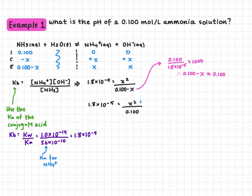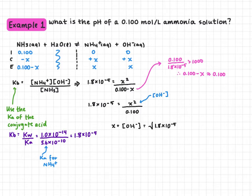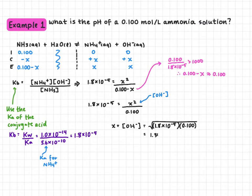We want to solve for X because X is the concentration of hydroxide. Our concentration of hydroxide equals the square root of Kb times the initial base concentration — that is, the square root of 1.8 × 10⁻⁵ times 0.1. We get 1.34 × 10⁻³ moles per liter.